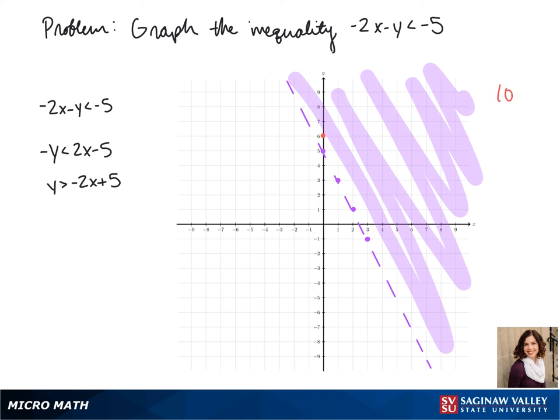Next, we can pick a point to test and make sure we shaded the right side. So if we plug in (0, 6), we get 6 > -2(0) + 5, which is 6 > 5. Since this is true, we know we shaded the correct side of our line.